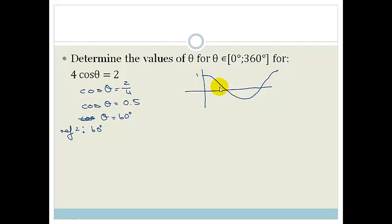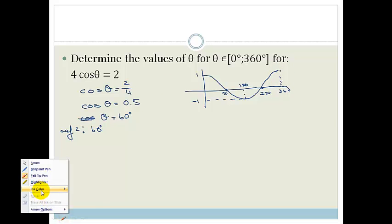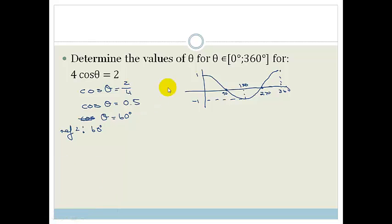I'm going to draw it here. This is 1, at 90 we're at 0, at 180 we're at minus 1, at 270 we're back at 0, and at 360 we're back at 1. So if I had to draw a line cutting across at cos theta equals 0.5, it would be like this. Do you see that we've got two places here where cos theta equals a half?